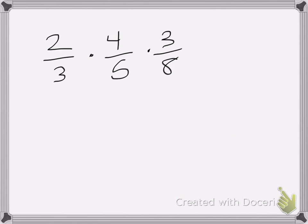We'll do one more. Here we have 2 thirds times 4 fifths times 3 eighths. Remember these symbols here are multiplication symbols. So we can just go ahead and cancel first. Let's see what we can cancel.